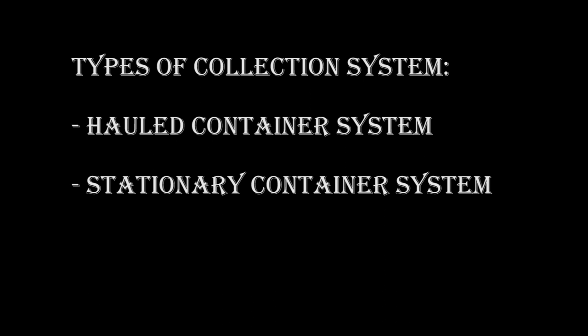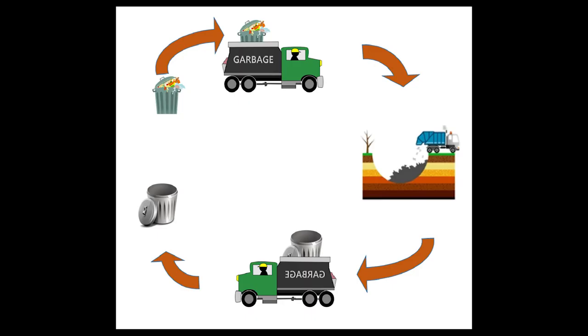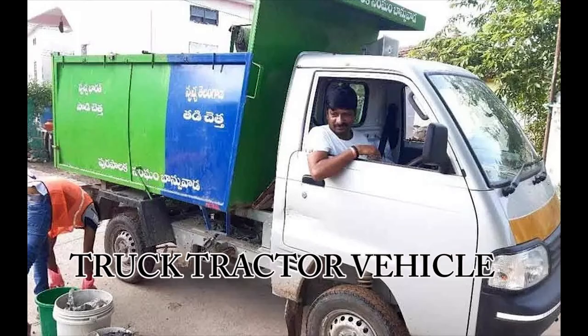Let's get acquainted with the hauled container system. In this collection system, containers used for storage of waste are hauled to the disposal site and returned emptied to their original location. The vehicles used for this collection system are of two types: the Tilt Frame Vehicle and the Truck Tractor Vehicle.